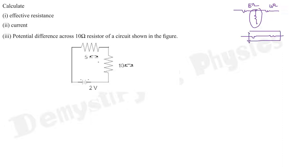To find the effective resistance in series combination, you just add them. So R' = R1 + R2 = 5 + 10 = 15 ohm. This is the effective resistance.